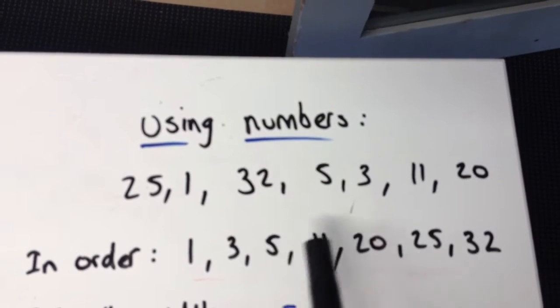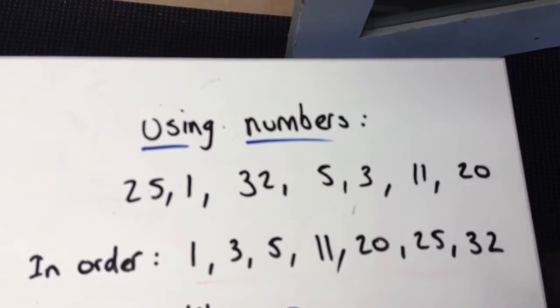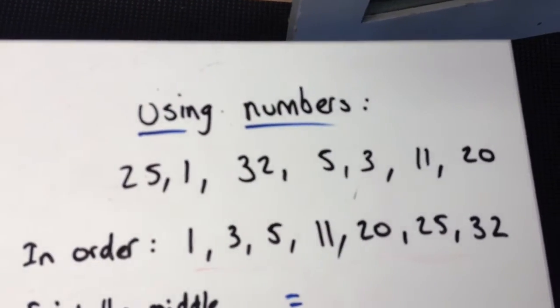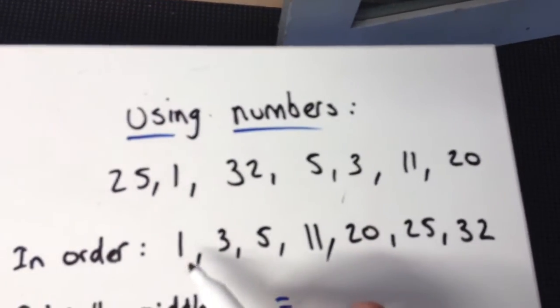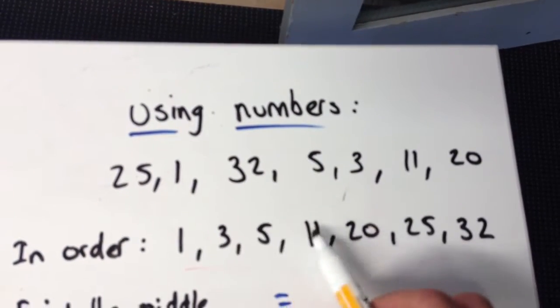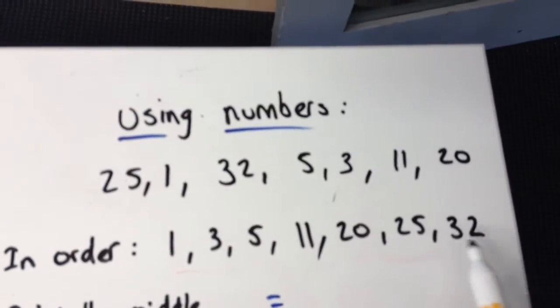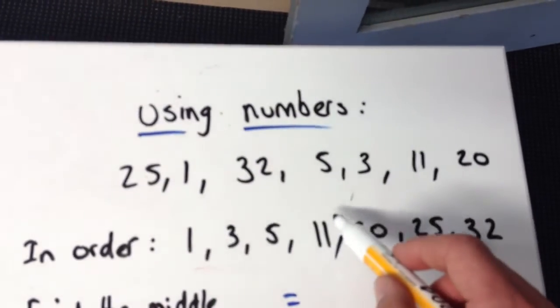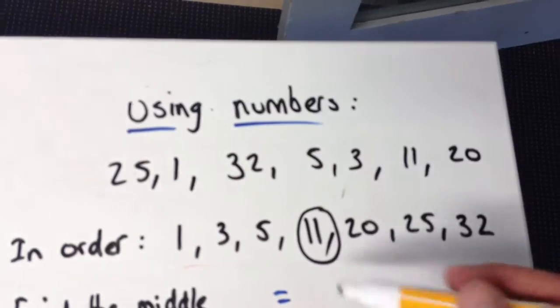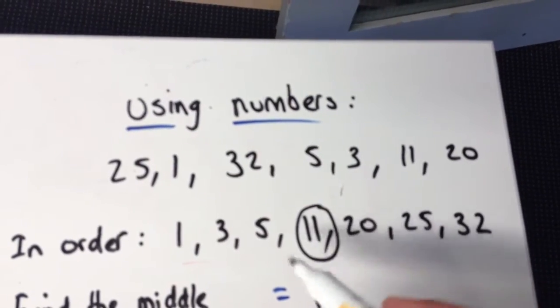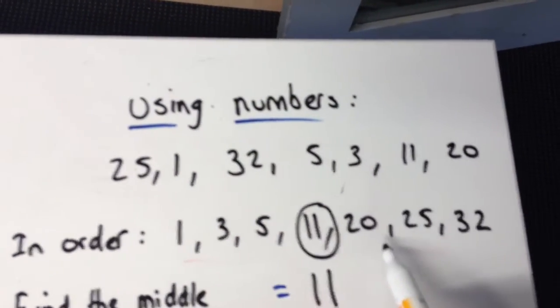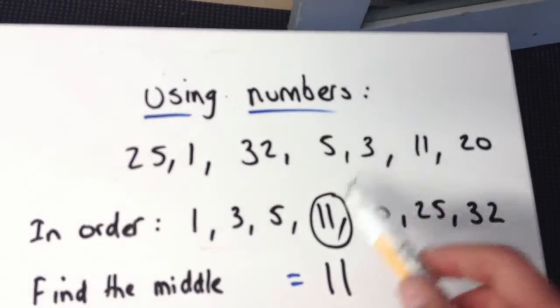Now I need to find the middle. There's seven numbers in my set: 1, 2, 3, 4, 5, 6, 7. So the middle number out of this group will be 11. Therefore my median is 11. There's three numbers on this side, three numbers on that side. That's the middle number.